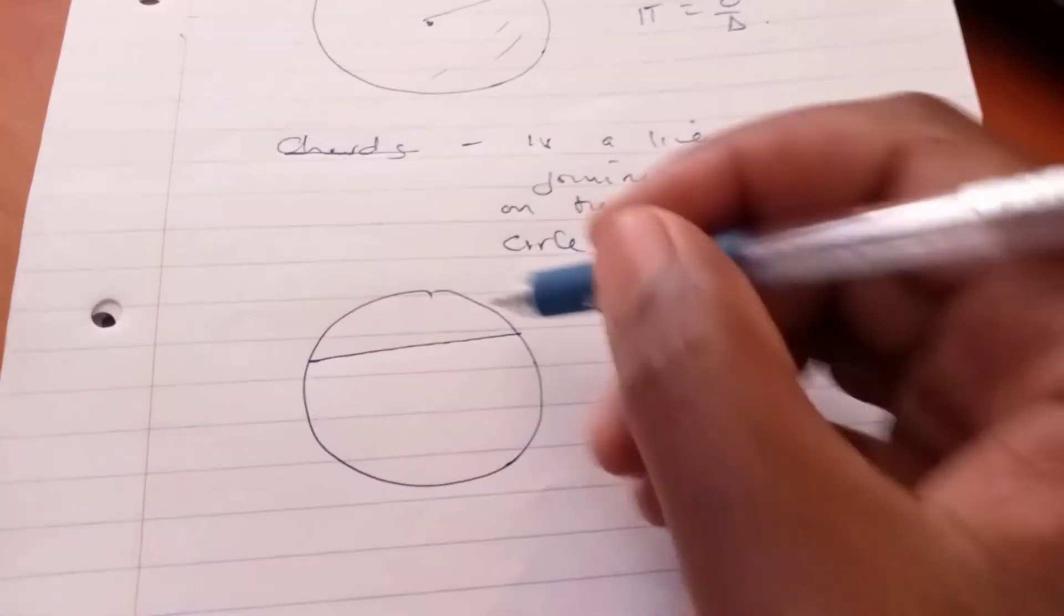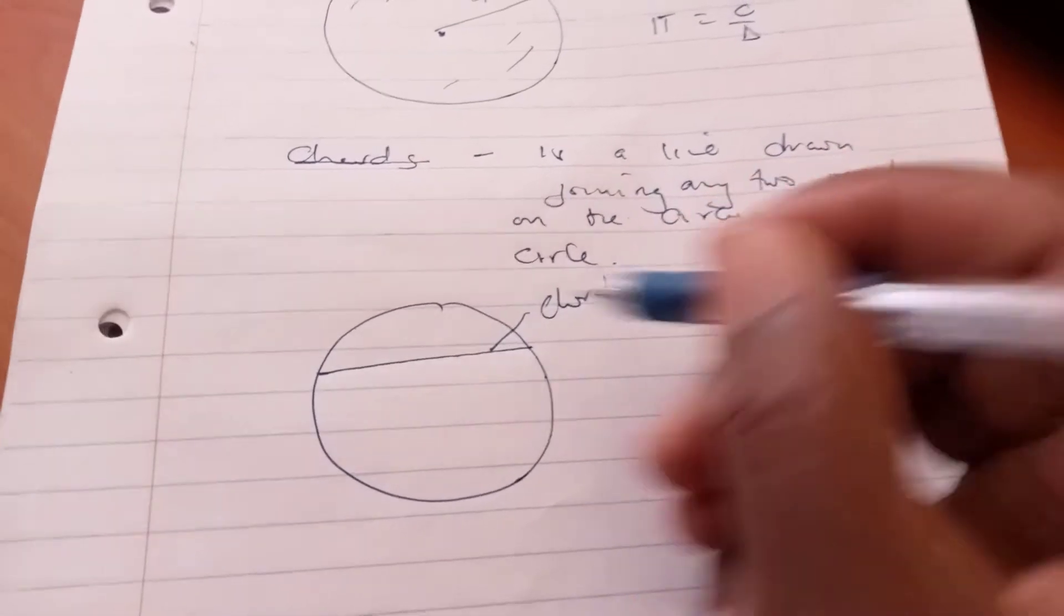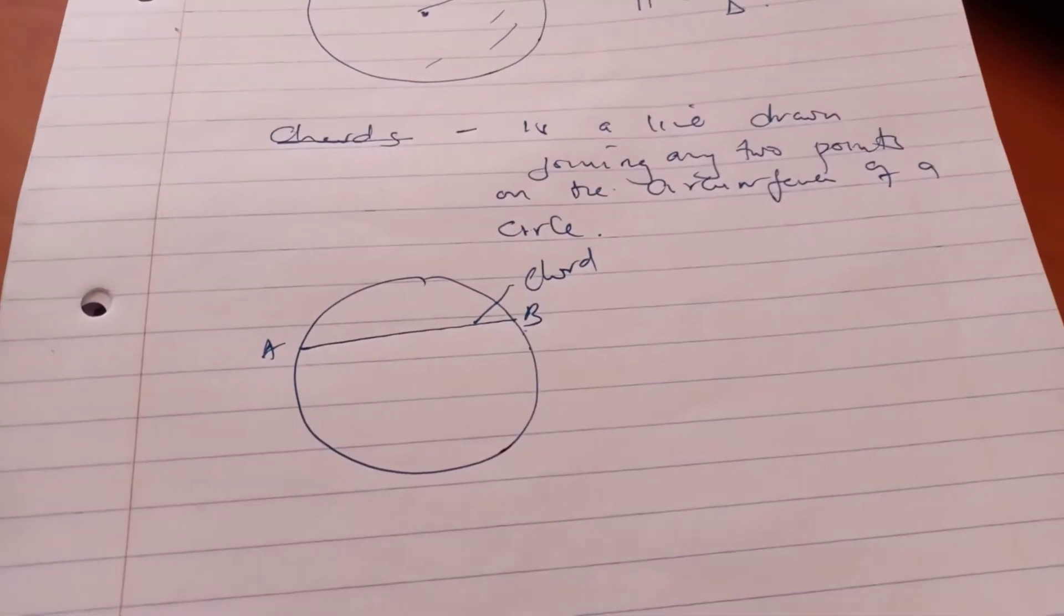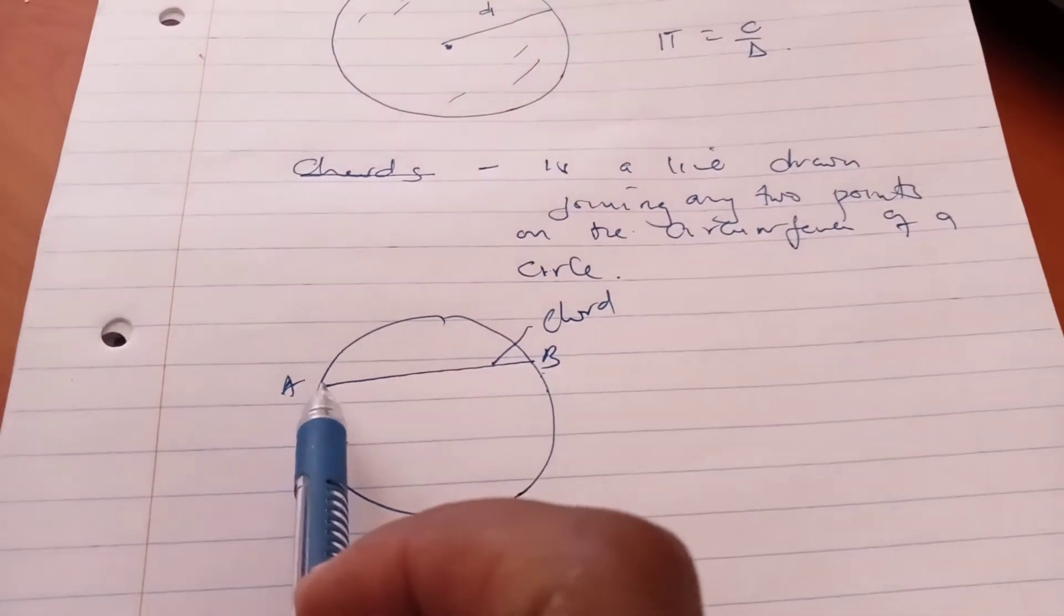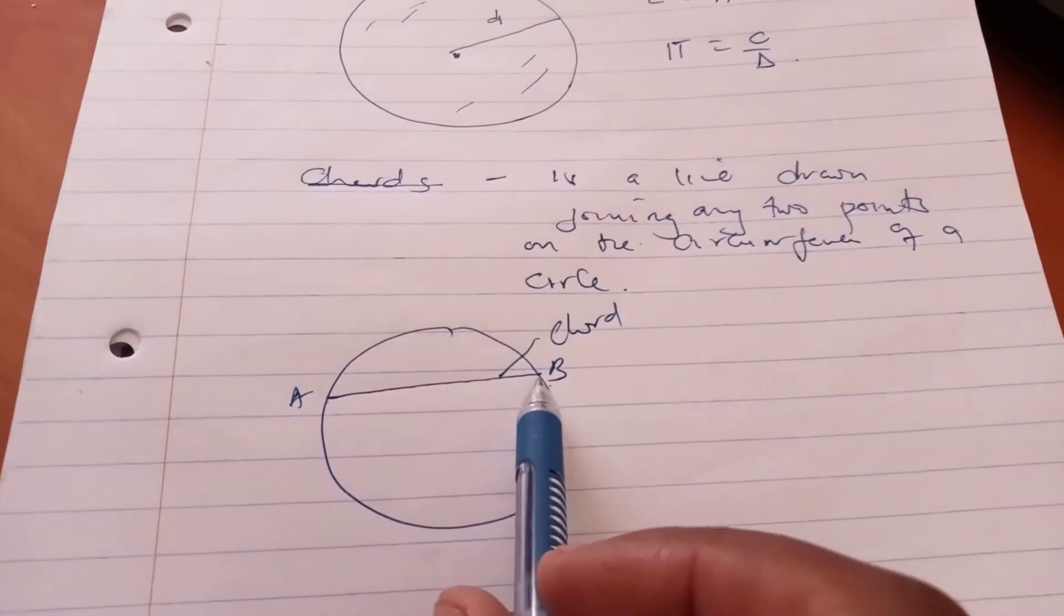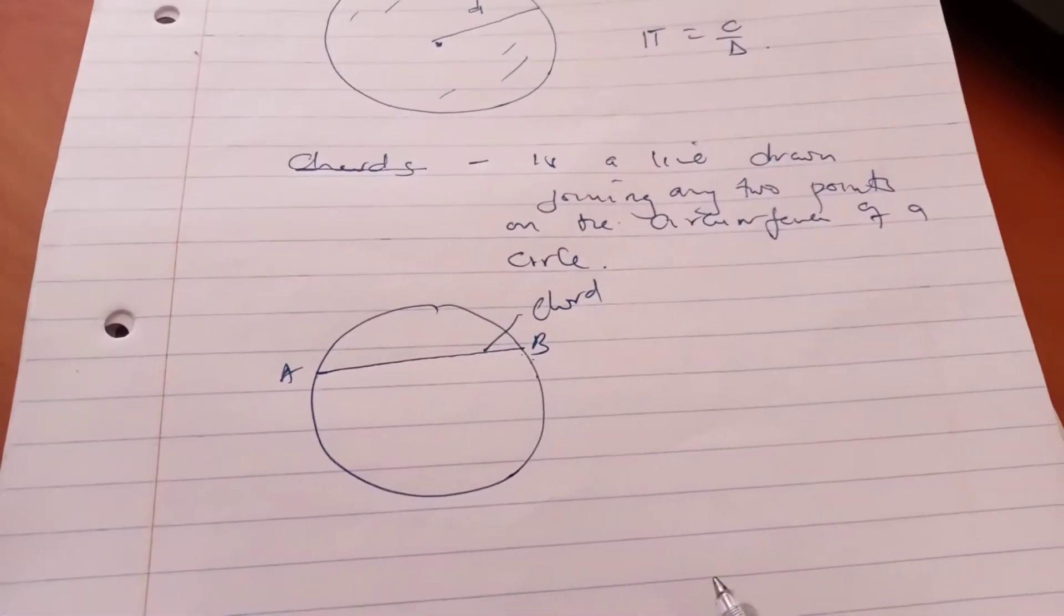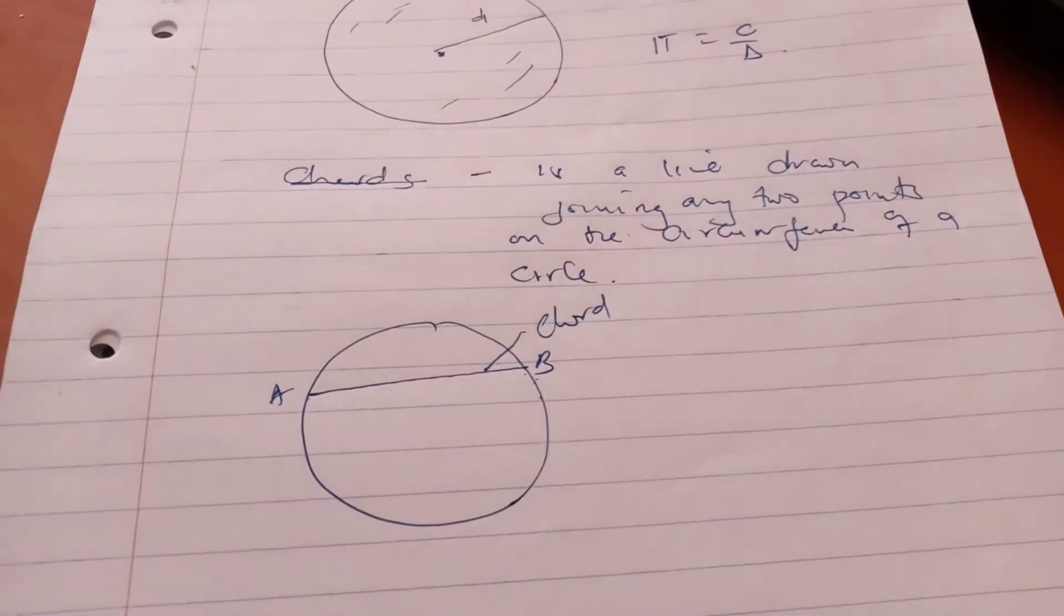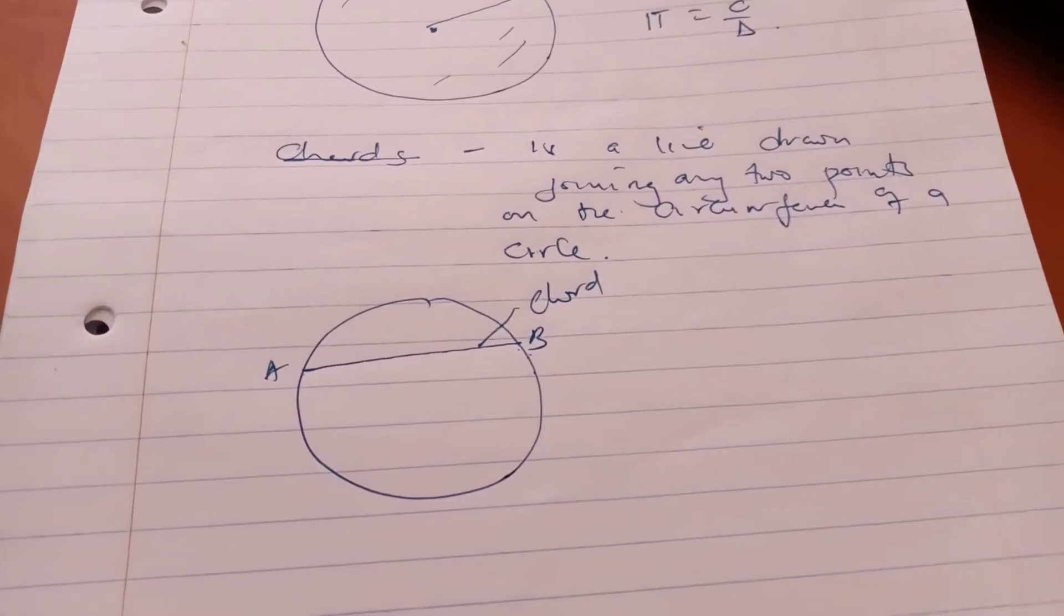So this is a chord. Line AB is a chord because it has been drawn touching this point and this point and the two points are on the circumference of a circle. Now, we may look at several aspects of chords.